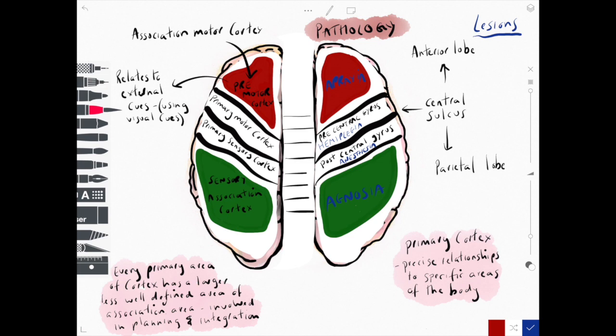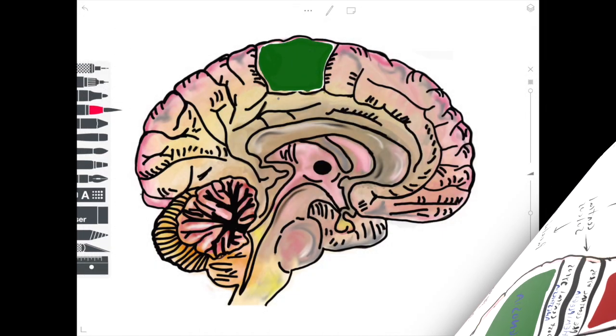If we have a lesion located in the area of sensory association cortex we get something known as agnosia which means not to know.